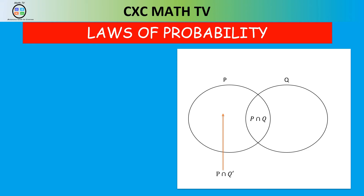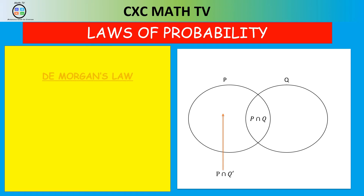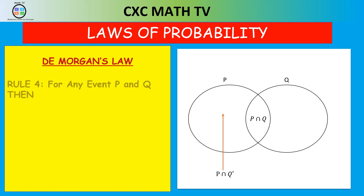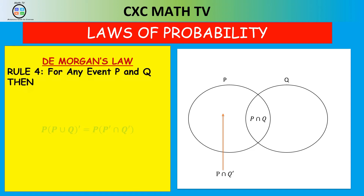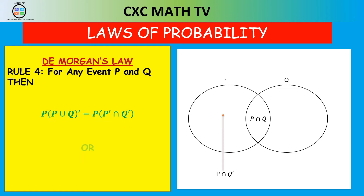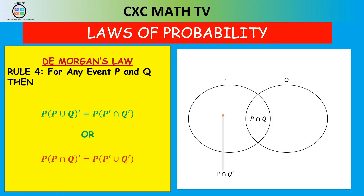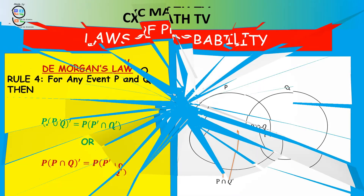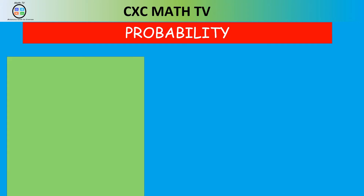Rule four is De Morgan's Law. It states: for any events P and Q, the probability of (P union Q) complement equals the probability of P complement intersect Q complement. Alternatively, the probability of (P intersect Q) complement equals the probability of P complement union Q complement. Let's look at an example to apply these formulas.